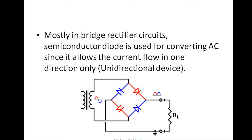If we connect the diode's positive end to the positive polarity of the power supply and the negative end to the negative supply, the diode is in forward bias, meaning it allows the flow of current. But if we connect the diode with the positive to negative and negative to positive, the diode blocks the flow of current. Using this feature of the diode, we use it for rectification purposes. In a bridge rectifier, we use four diodes in different connections.